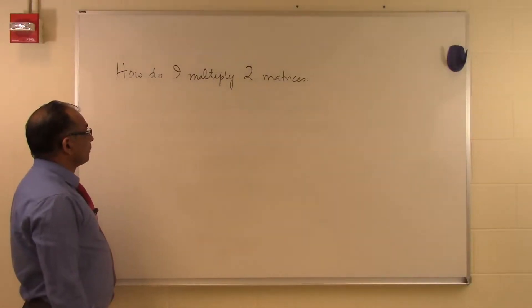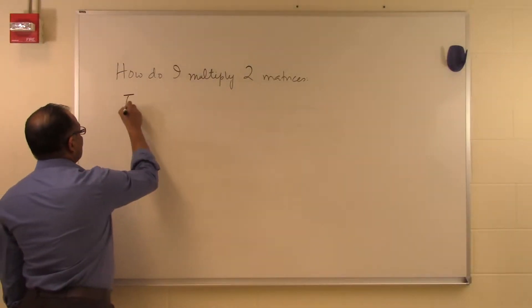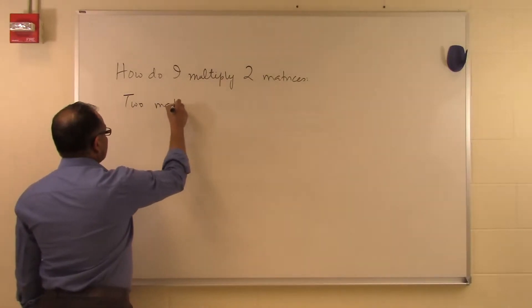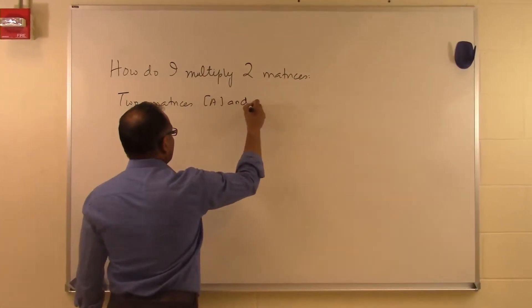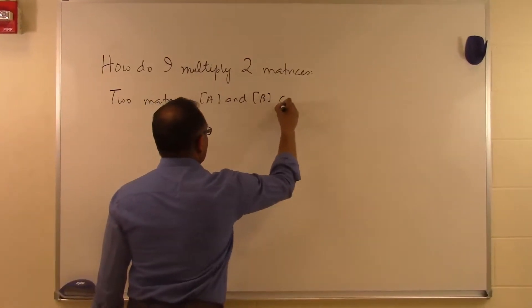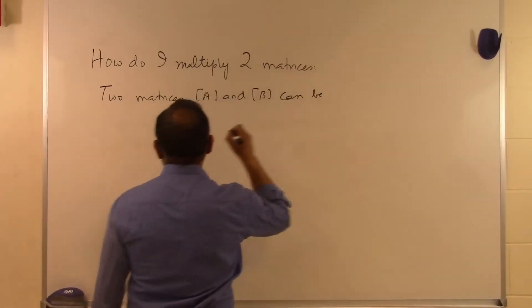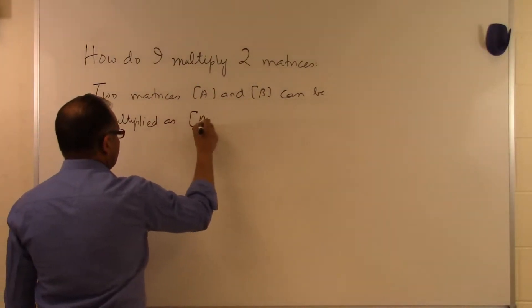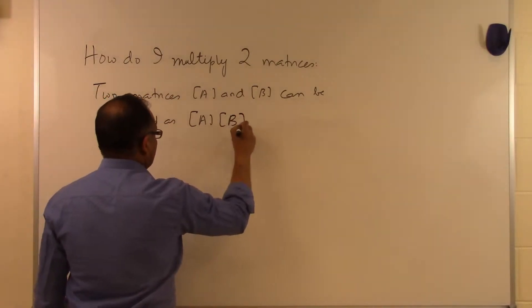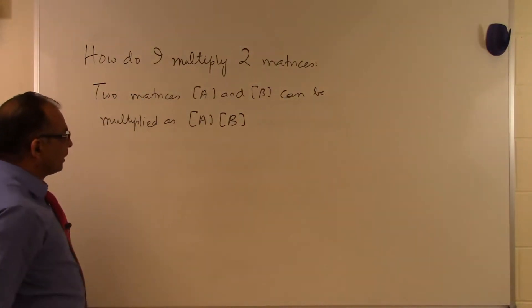In this segment, we will talk about how to multiply two matrices. Two matrices A and B can be multiplied as A times B. We can also have multiplication like B times A, but we'll limit it to A times B.